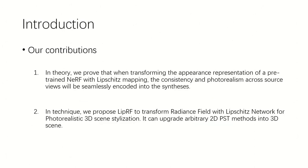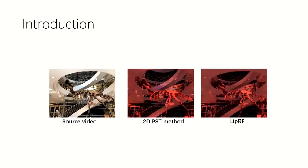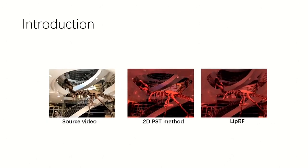In theory, we prove that when transforming the pre-trained NeRF with Lipschitz mapping, the consistency and photorealism across views will be encoded into the synthesis. In technique, we propose LibRF to transform radiance fields with a Lipschitz network for this task. Such an approach completely eliminates the drawbacks of the 2D style transfer method.